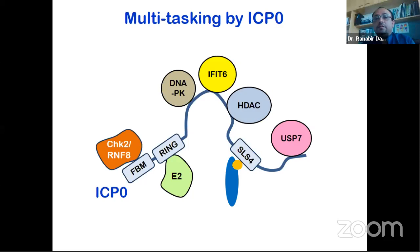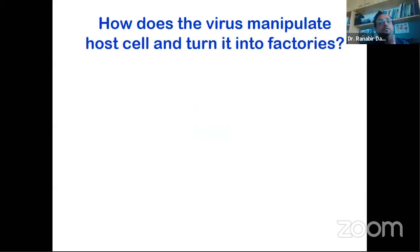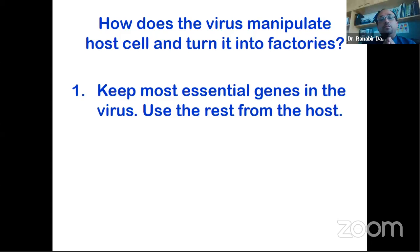ICP0 has many other functions because it interacts with many other proteins in human cells, including DNAPK, IFTI6, HDAC, and USP7 — as shown by other groups. It interacts with many proteins and regulates multiple things inside human cells. This is why viral proteins allow the virus to multitask — regulating multiple processes in the human cell by interacting with multiple human proteins using distinct regions of its amino acid sequence.